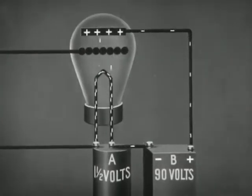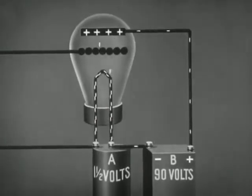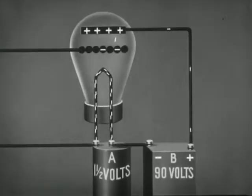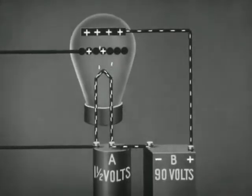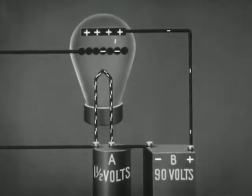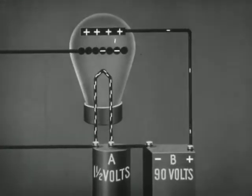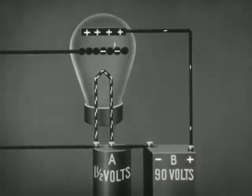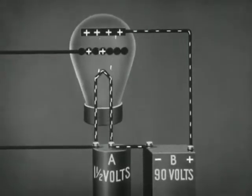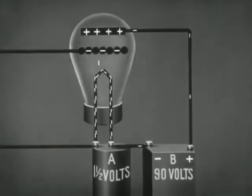We have already seen that when the grid swings more positive, more plate current flows, and when the grid swings less positive, less plate current flows. The plate current, therefore, will rise and fall at the same rate as the radio frequency current in the grid circuit. Such a current is called a pulsating direct current. The vacuum tube may be used to amplify the weak voltage induced in the aerial circuits. Its use as an amplifier is possible because a small change in the grid voltage brings about a large change in the amount of plate current. The grid, therefore, actually controls the powerful current generated by the high voltage battery.